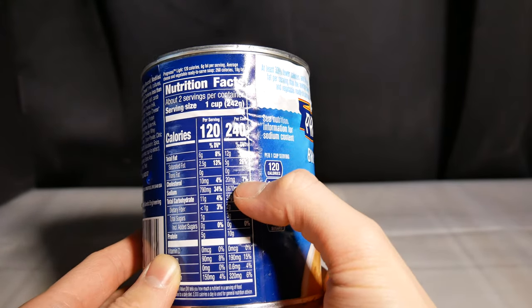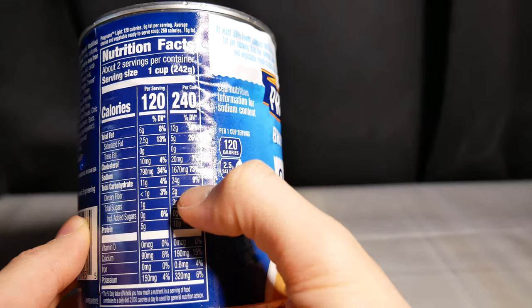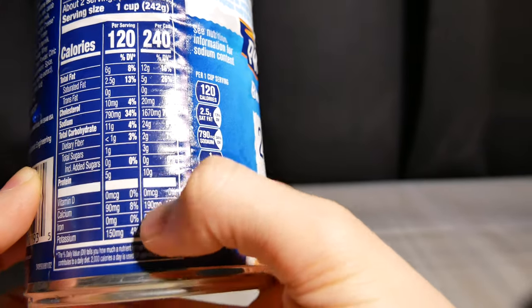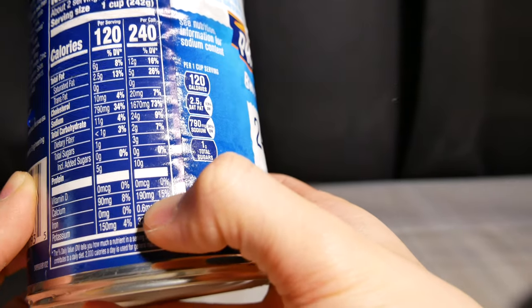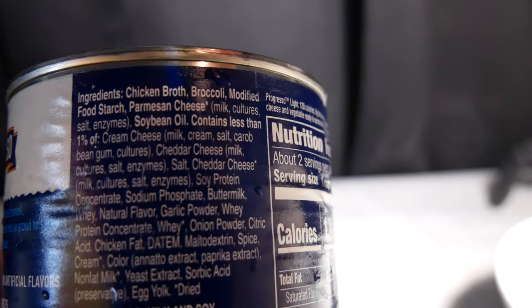Cholesterol 7, sodium 73%, carbs, fiber, sugars 3 grams, protein. Vitamins: 15% calcium, 4% iron, 6% potassium. Some of the ingredients: chicken broth, broccoli, food starch.